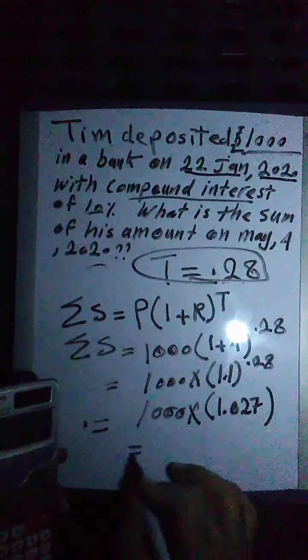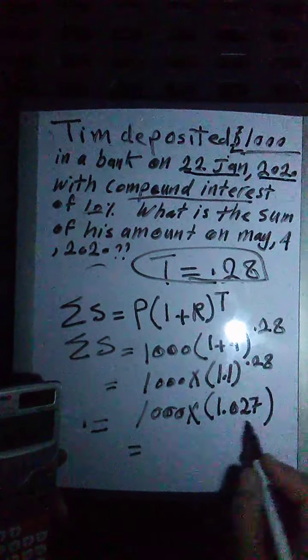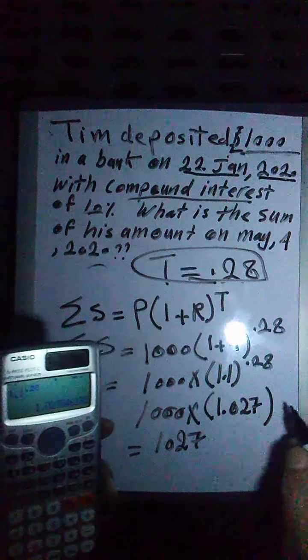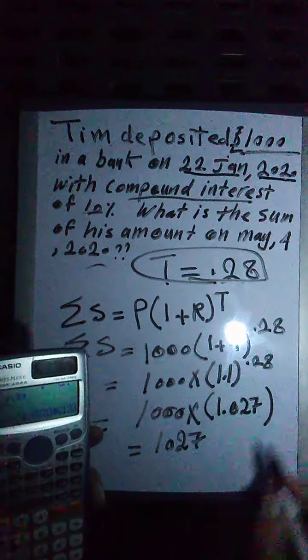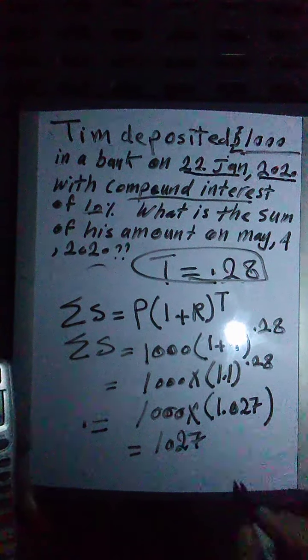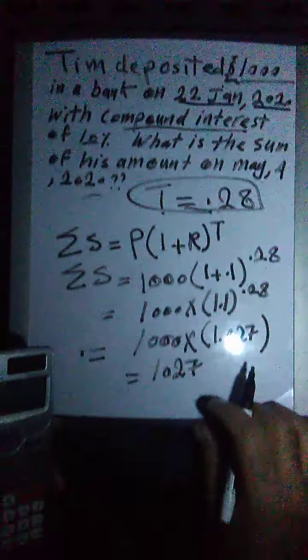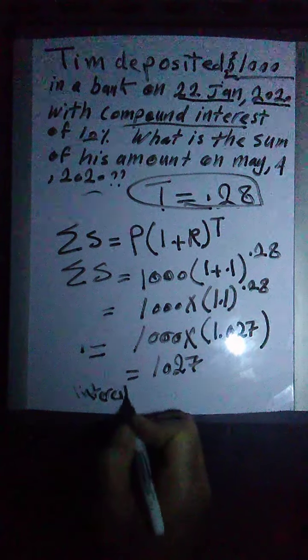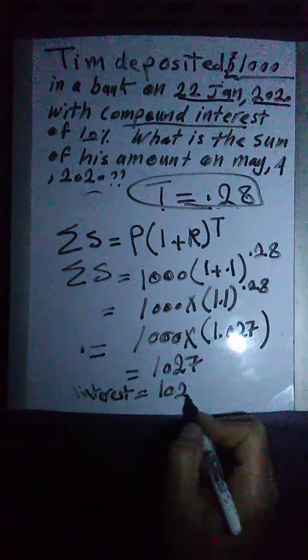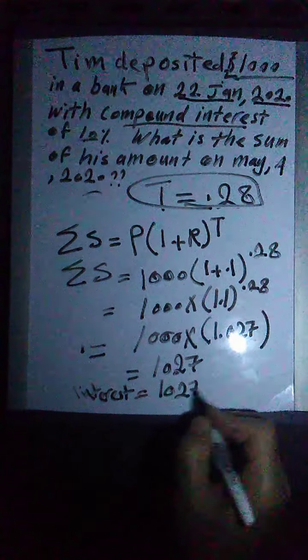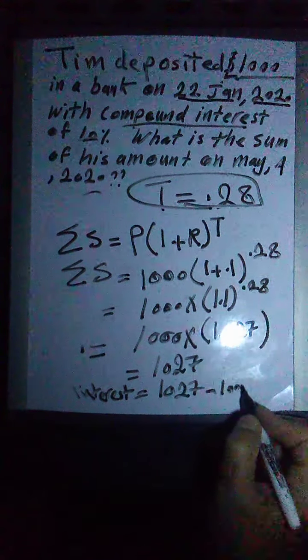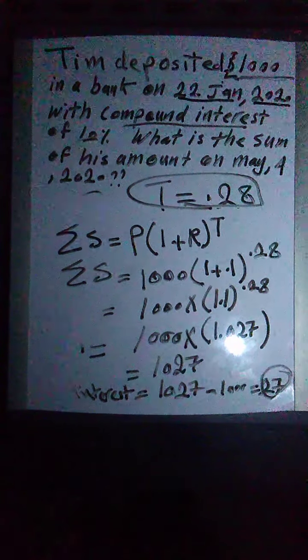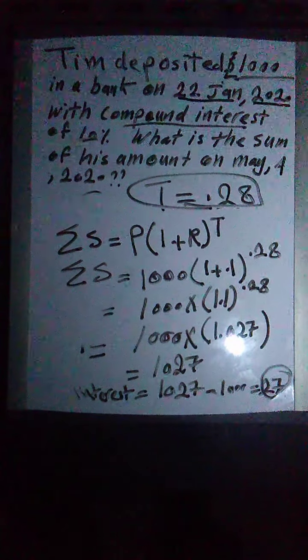Then this amount at the end of this period, when we multiply it, it will be $1027. You can take three numbers of the digits, that's fine. Then if you want to calculate the interest only, the interest amount, the interest amount will be the whole sum 1,027 minus the principal which was 1,000. So they made $27 in the bank in this period. Thank you.